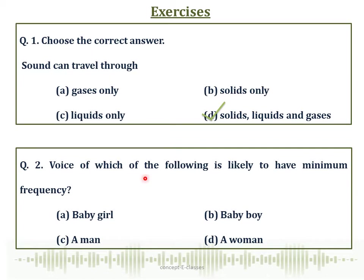Question number 2: Voice of which of the following is likely to have minimum frequency? Frequency determines the pitch or shrillness of the sound. If frequency is high, the pitch of the sound would be high, meaning more shrillness. So the man would have the least frequency because the pitch of a man's voice is very low. Hence, the frequency of the man's voice would be lowest compared to others.